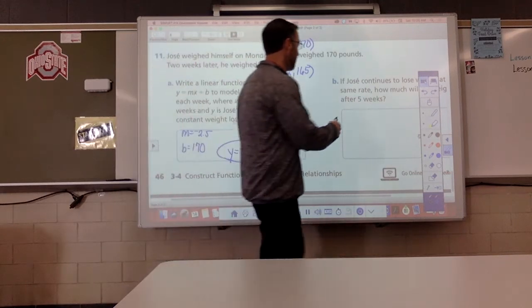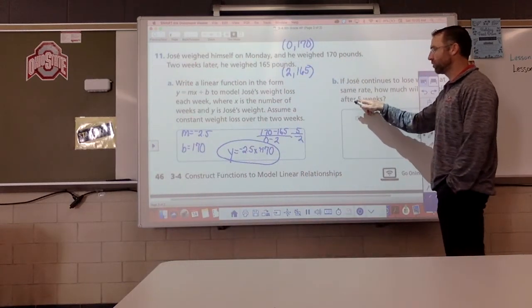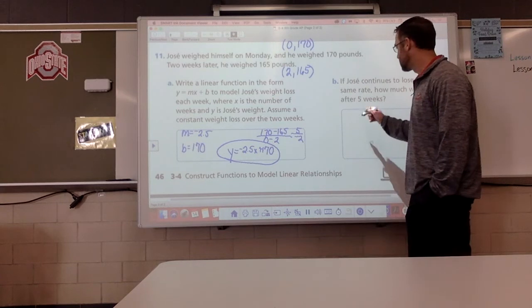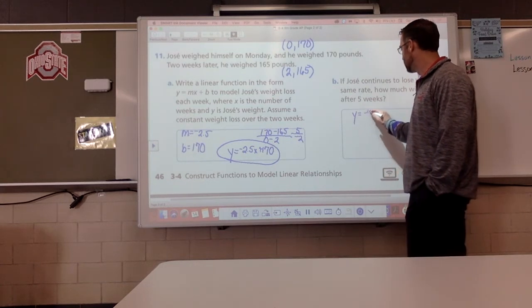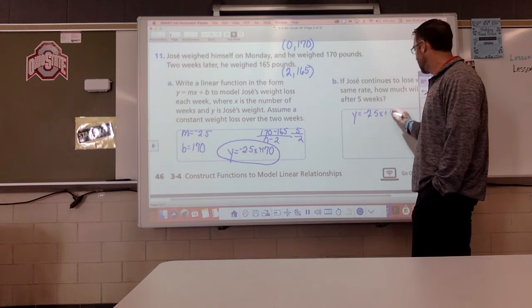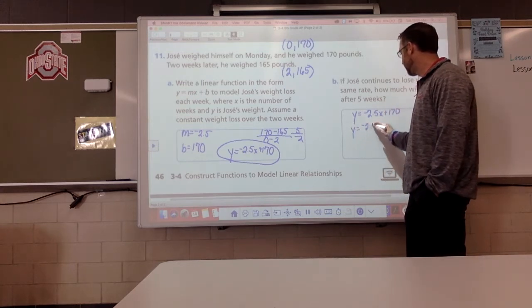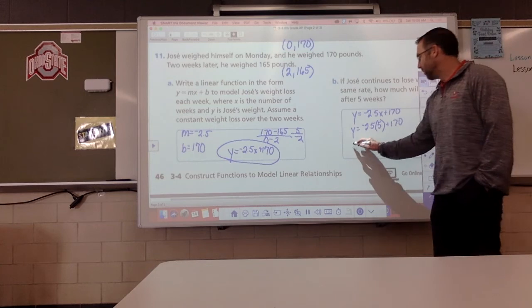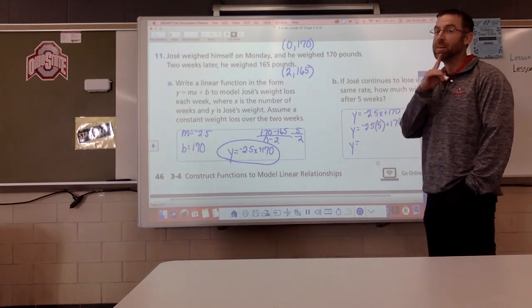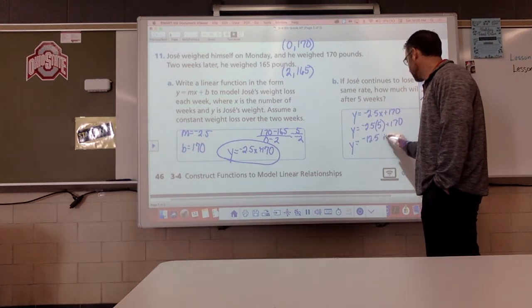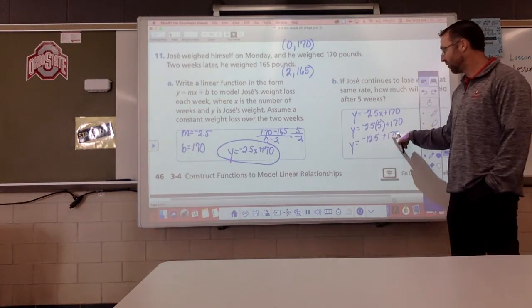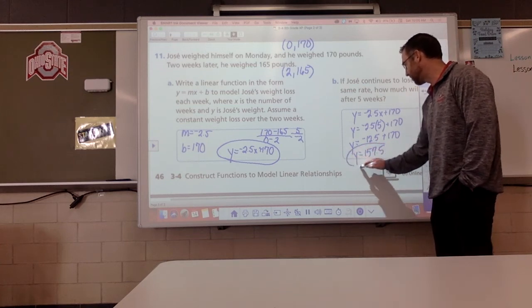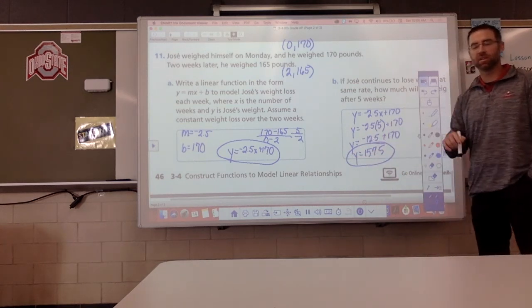Letter B. If he continues to lose weight at that same rate, how much will he weigh after five weeks? Well, this is his weight. The y value is his weight. X is the number of weeks. So I'm going to use our linear function. Negative 2.5X plus 170. And I am going to substitute 5 into this equation for X, since it represents the number of weeks. Well, this, that's negative 12 and a half, my friends. Now, if I add negative 12 and a half plus 170, that is 157 and a half. So after five weeks, he would weigh 157 and a half pounds.